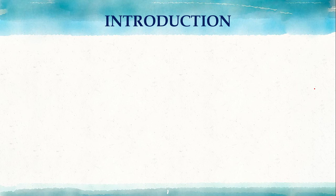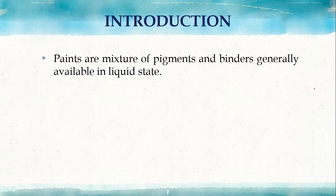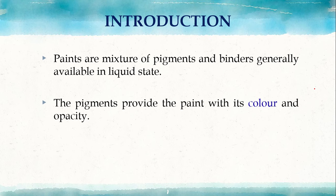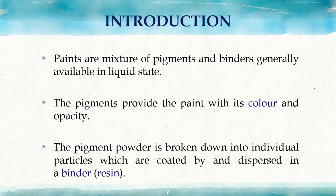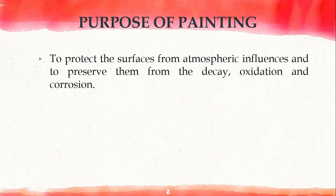Welcome back to my channel. In this video I'll be explaining various types of paints and their applications. First, the definition of a paint: paint is a mixture of a pigment and a binder. The pigment is the coloring agent — it gives paint its various colors. The pigment is mixed with the binder to form the paint.